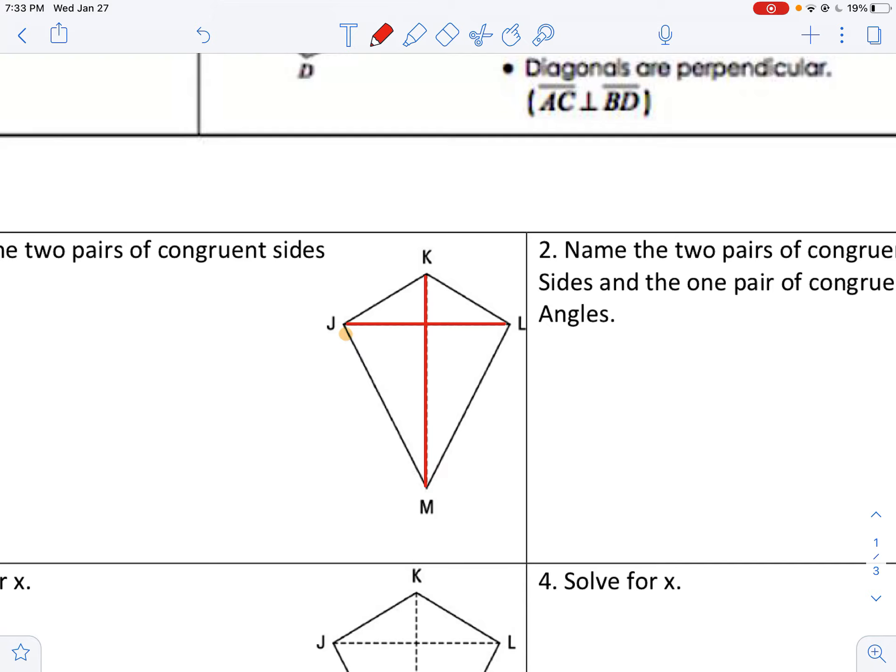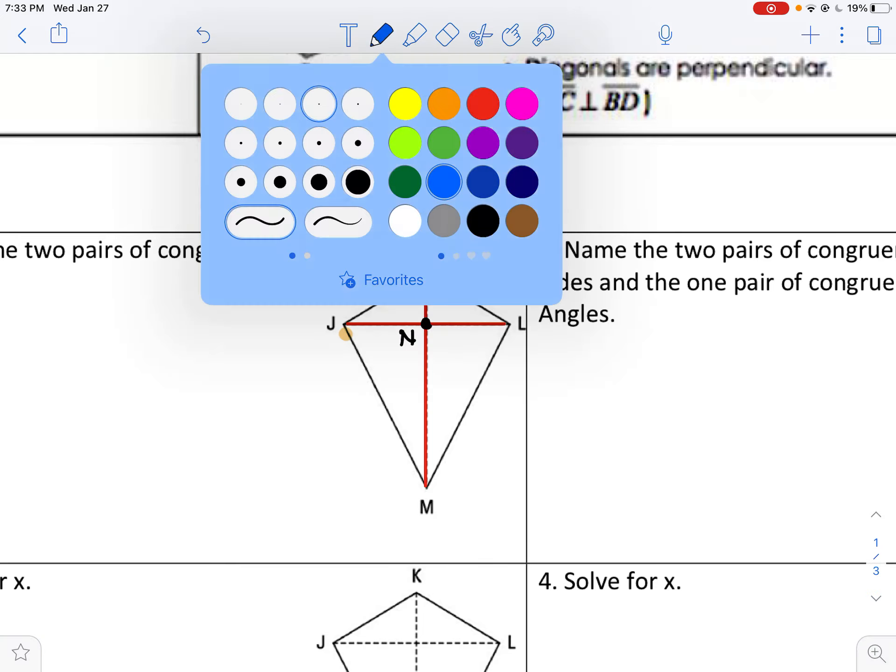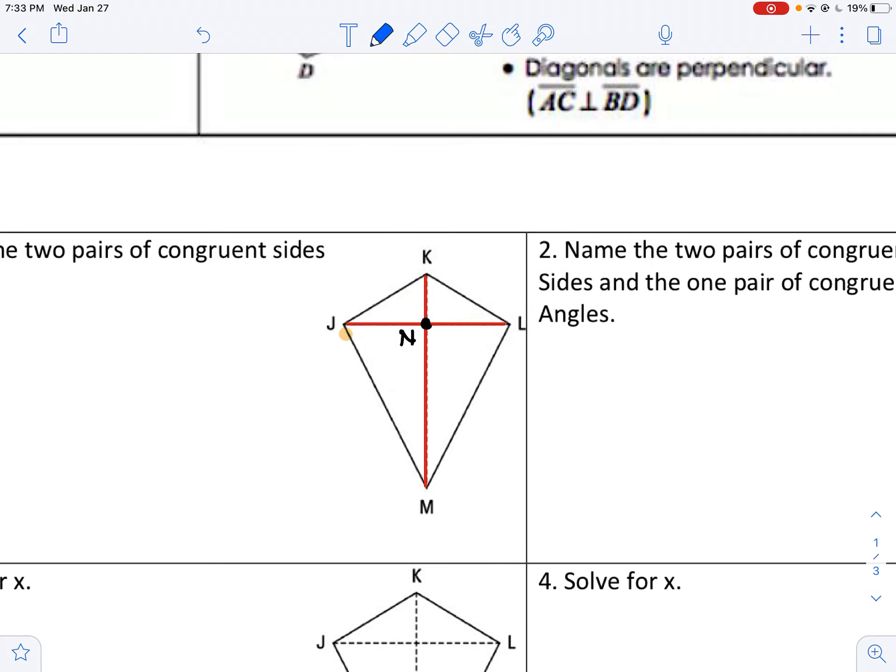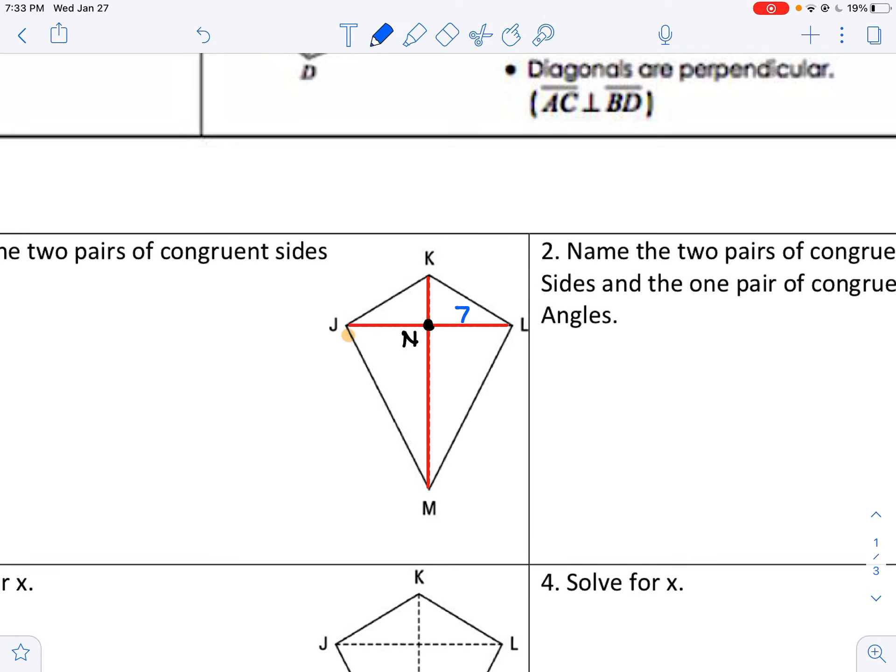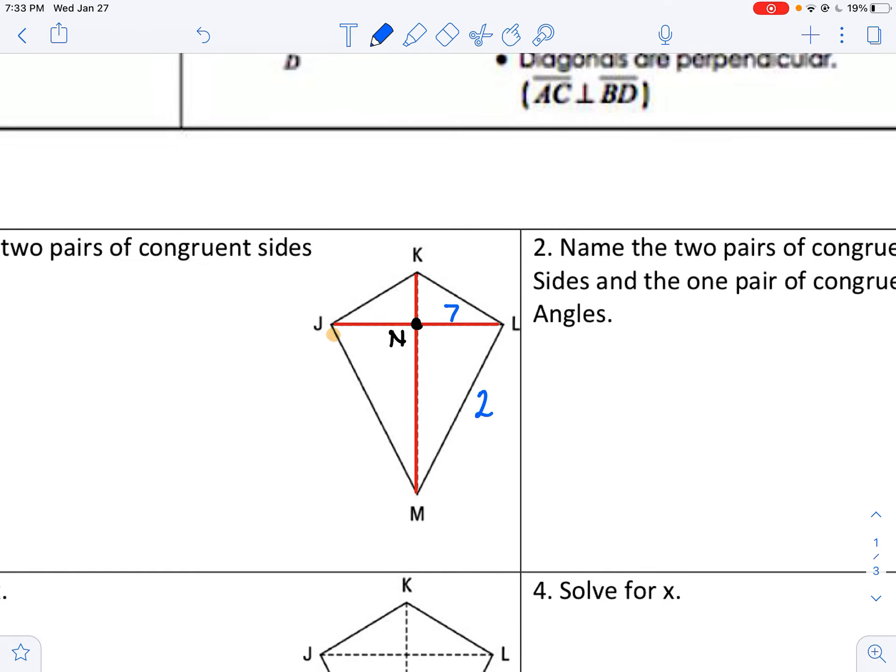Well, what if I told you, and I'm going to name that point in the middle there, I'm going to name that N. So what if I told you that NL was 7, and this was 25? And I want to find all the other side lengths in the kite.